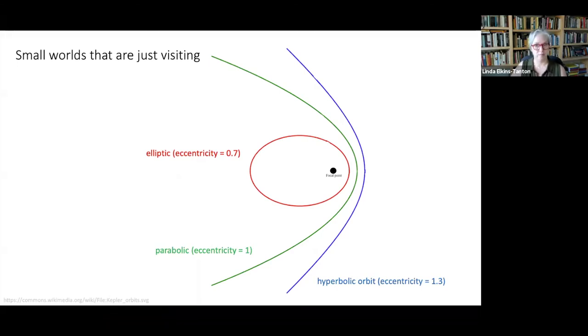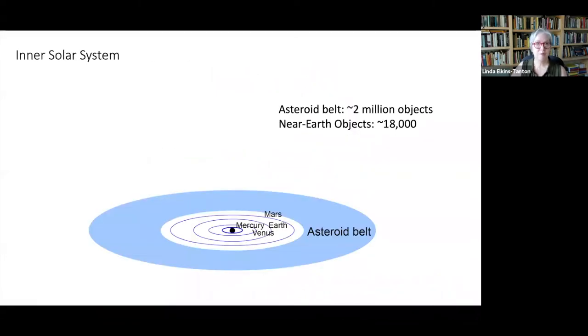So now let's turn to resident small worlds, the ones that stay in our solar system, at least for now. We're going to start with the inner solar system. Small worlds are concentrated in areas where they're relatively protected from disruptive gravitational interactions from other objects. Otherwise, of course, they would be moved out of the orbits that they're in. The most familiar of these concentrations is the asteroid belt between Mars and Jupiter. That's what you're seeing here, just the four inner solar system planets and the asteroid belt where it lies outside of Mars.